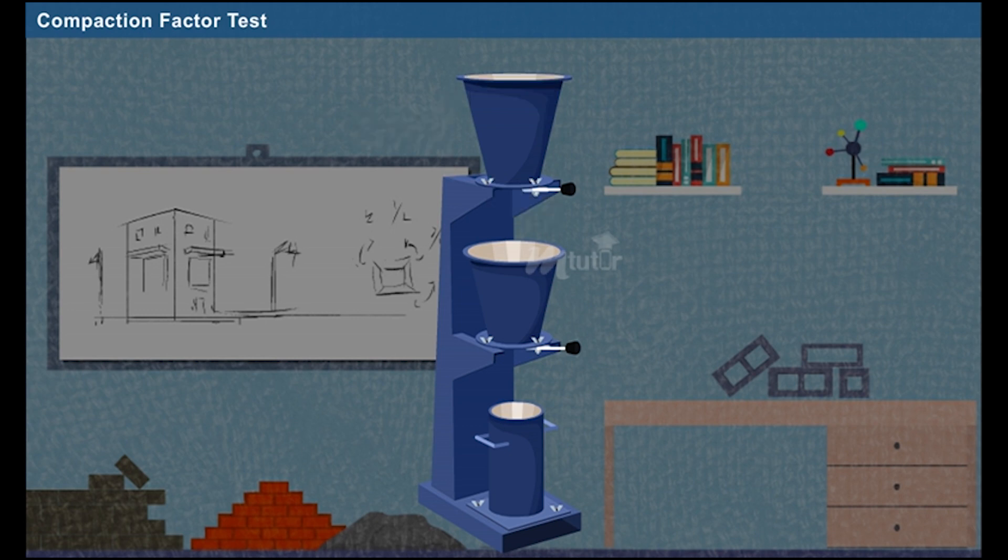The lower hopper's top internal diameter is 229 mm, bottom internal diameter is 127 mm and internal height is 229 mm. The vertical distance between the two hoppers is 239 mm. The bottom cylinder's internal diameter is 152 mm and internal height is 305 mm. The vertical distance between the lower hopper and bottom cylinder is 203 mm.